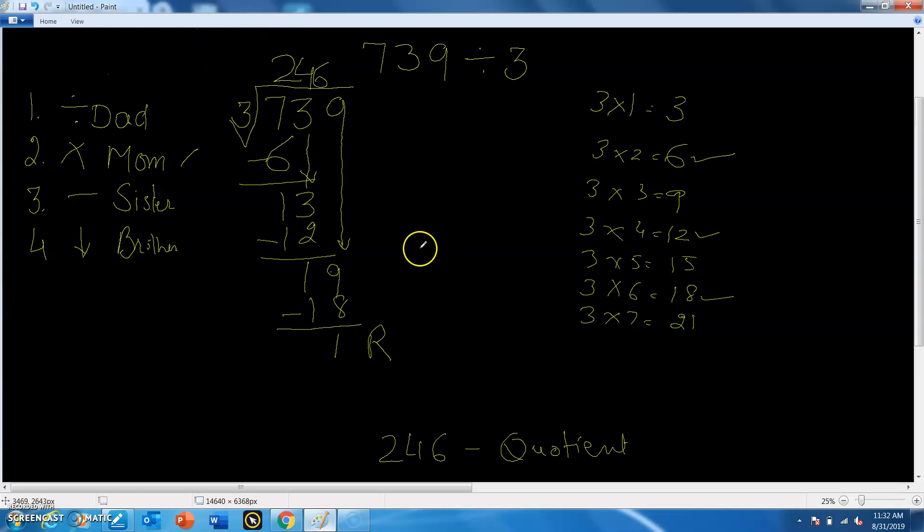Now how to check the answer? We will move from here, go to here, and to this side, and again back to here. We will see that if 246 is multiplied by 3, that means this number multiplied by this, it comes...